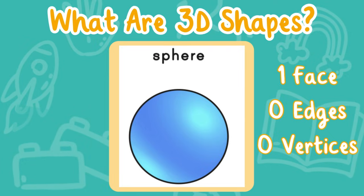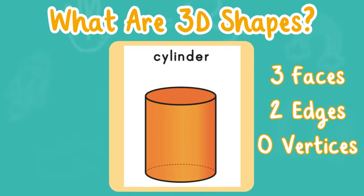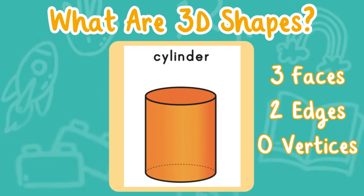Have you ever seen a sphere before? Next let's look at a cylinder. A cylinder has three faces, two edges, and zero vertices.